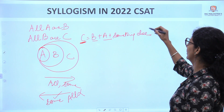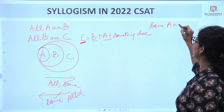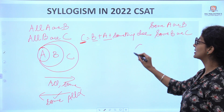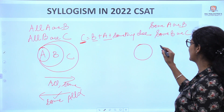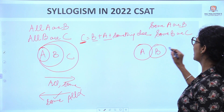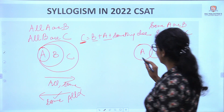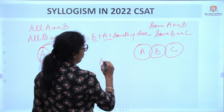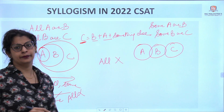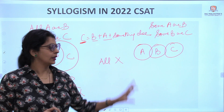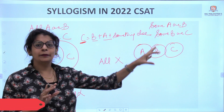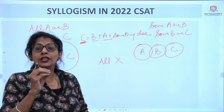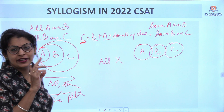Next statement type is 'Some.' For example: Some A are B, Some B are C. The diagram for 'some' shows partial overlap. If in the conclusion there is 'all,' it is always false because we cannot see it in the diagram. The things which are visible in the diagram are true; the things which are not visible are false — definitely false.